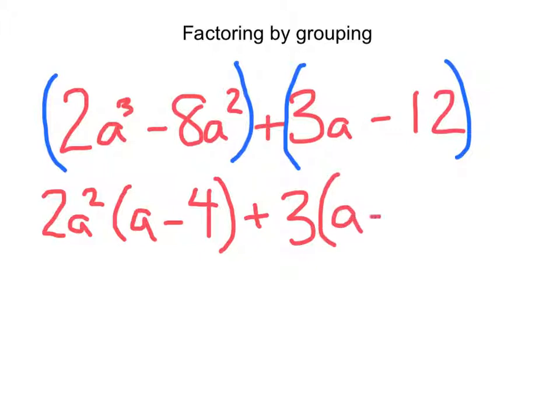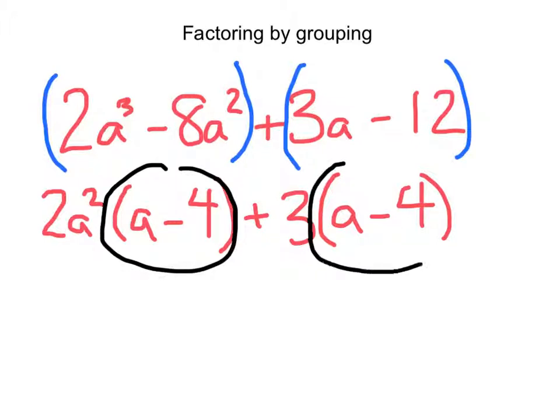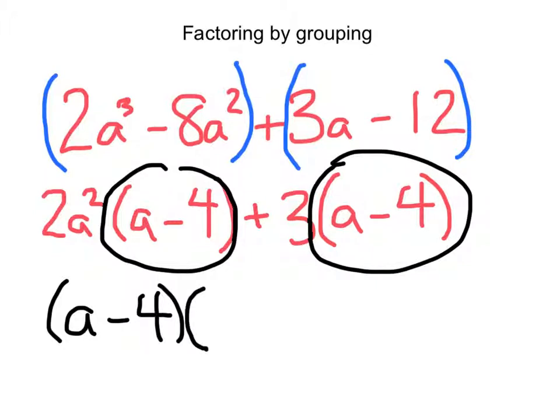Again, we'll notice a-4 is in the parentheses. Now, these two should be the same because that's going to help us. We're going to bring those down, a-4, just one of them. And then the other parentheses, the terms are going to come from right here and right here. So we have 2a² + 3.